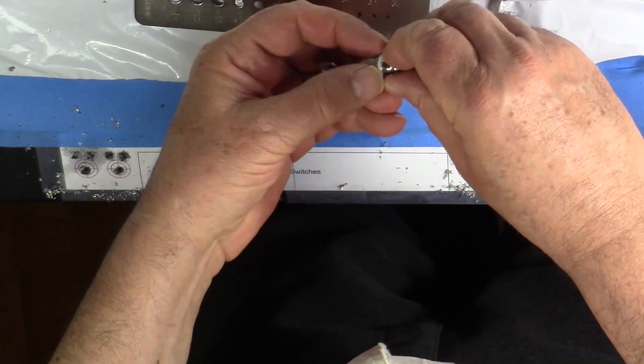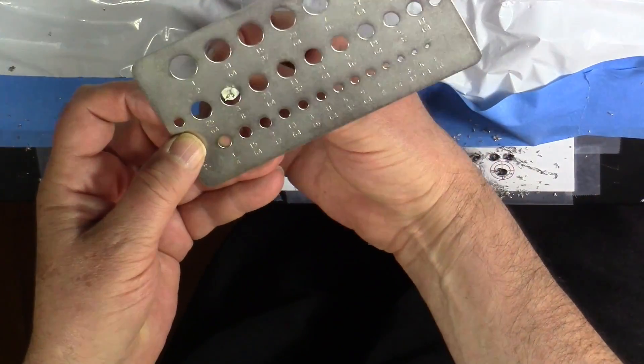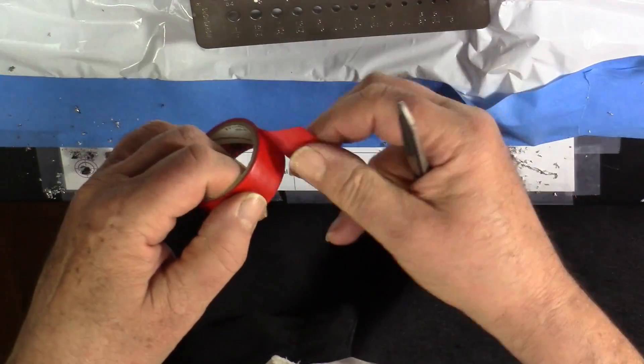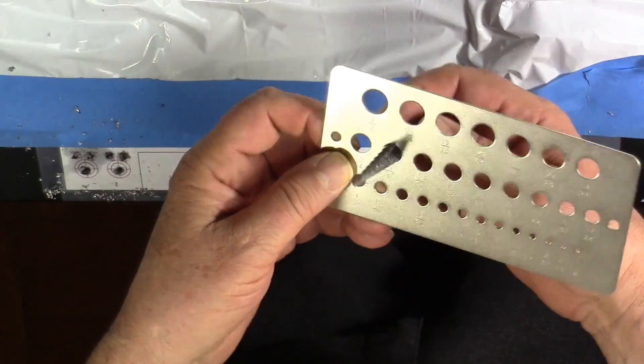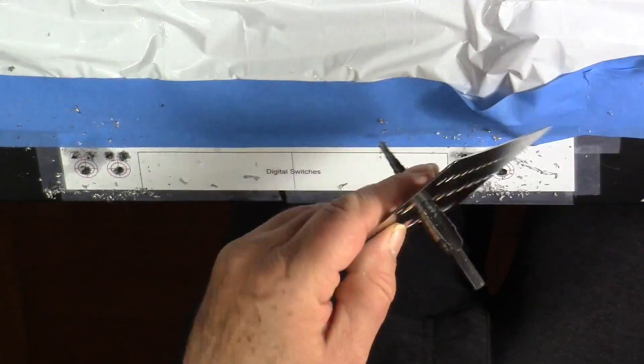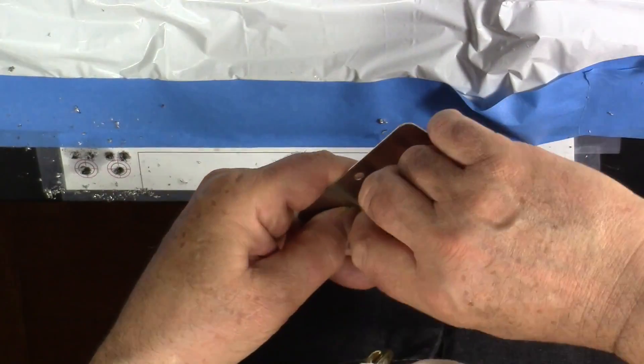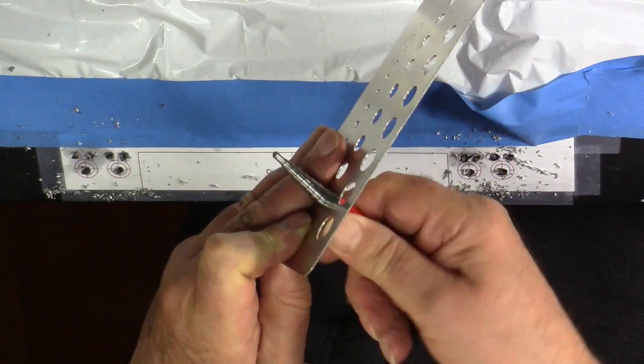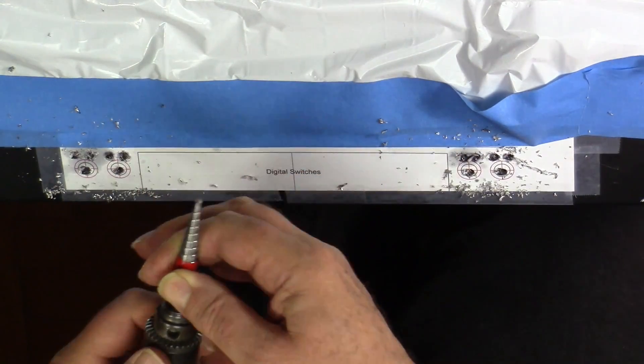Let me measure this BNC connector. I've got 3 eighths of an inch for the inside threaded portion of the BNC. And now I'm going to tape off the universal bit so that I have some indication as when to stop drilling. I don't really like universal bits. They tend to wander off too much, but I don't really have an alternative.